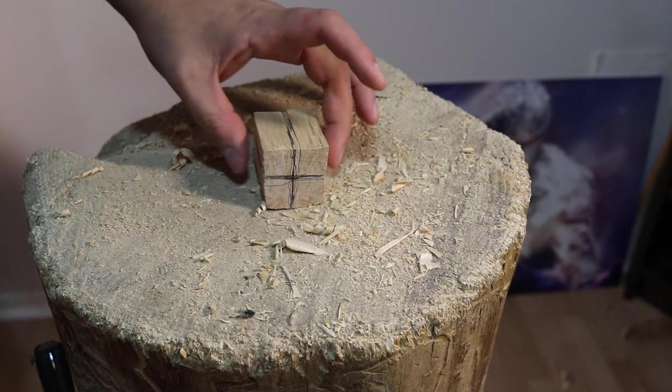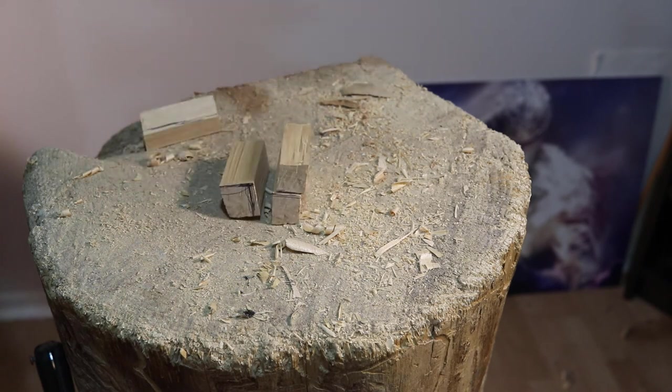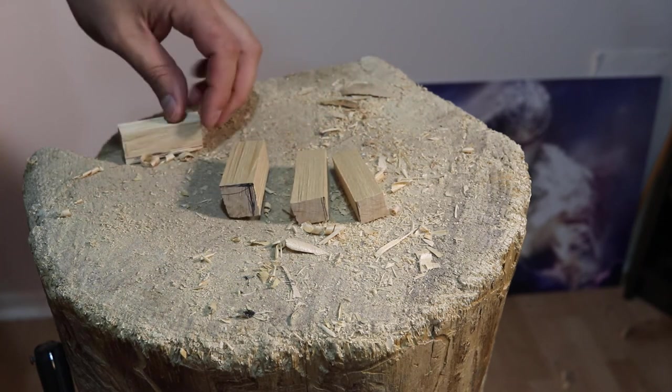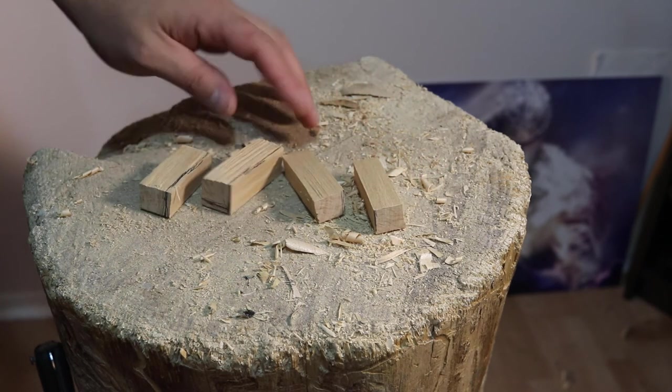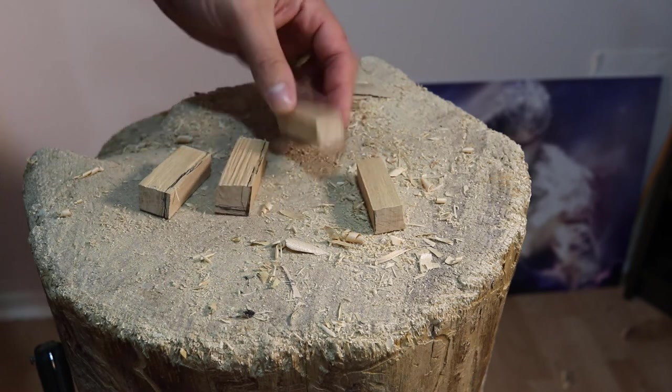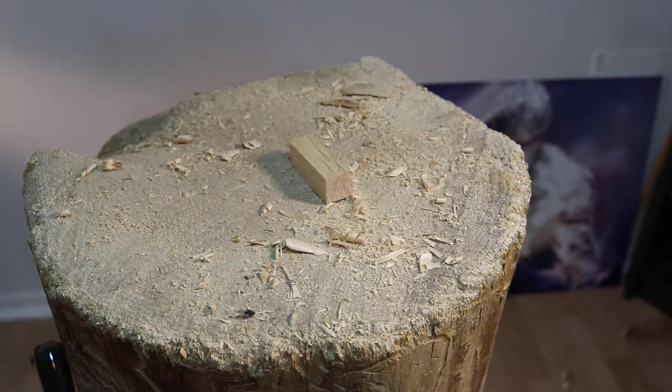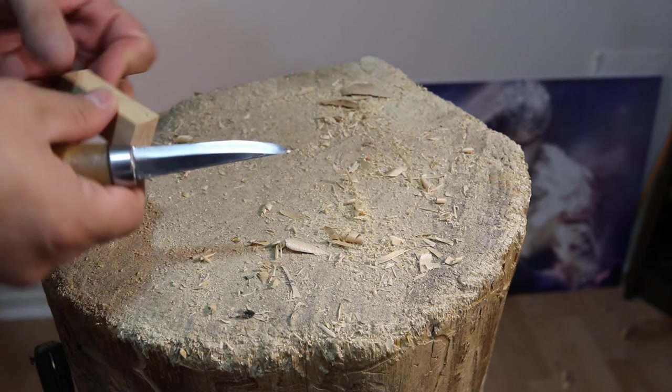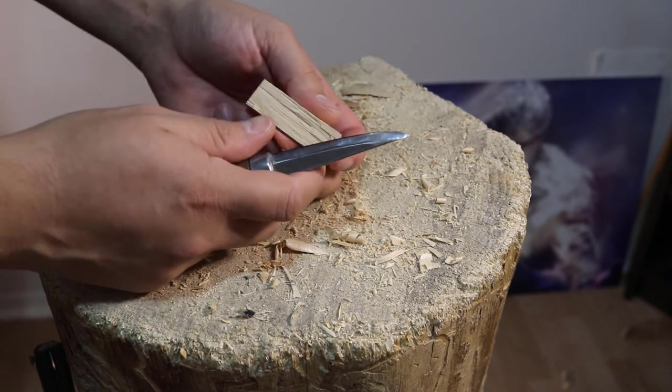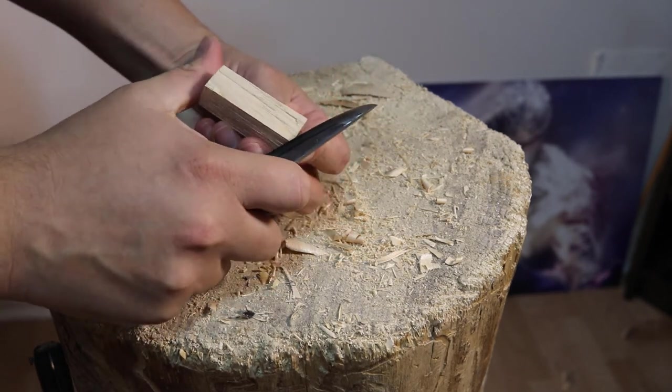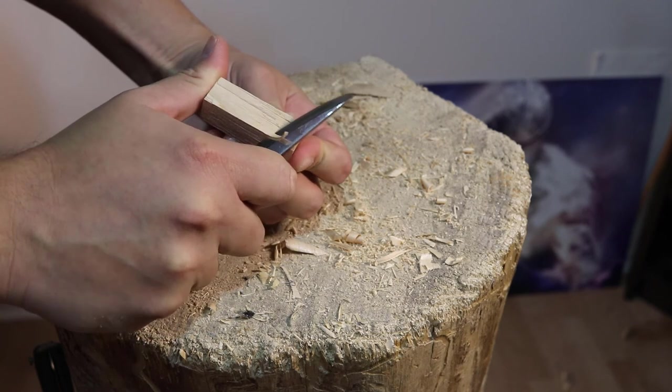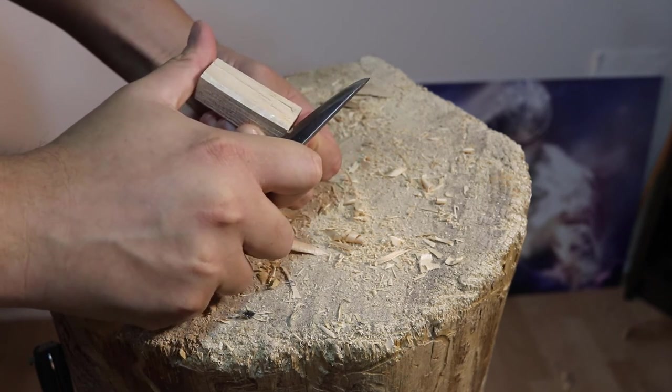This one will actually be used as a lanyard bead or toggle, which makes it easier to grip onto, a little something extra. Since it's already a great size, I'm just gonna take down the corners with my sloid knife and round it off. I want the totem to be relatively round and cylindrical so that I can begin to carve a face into it.